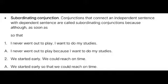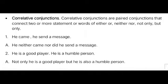Number three: co-relative conjunctions are paired conjunctions that join two or more sentences. Words like 'either...or,' 'neither...nor,' 'not only...but also.'